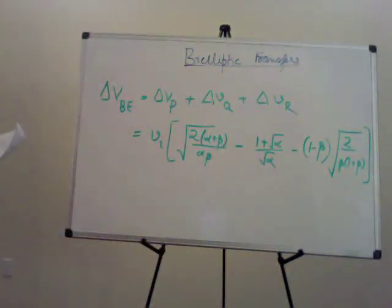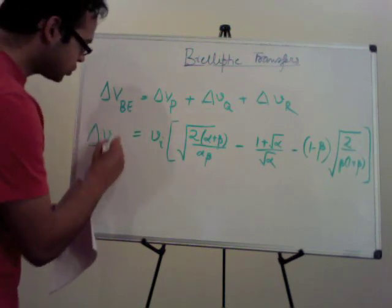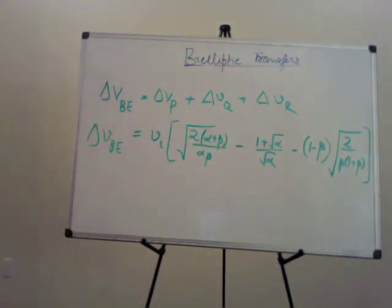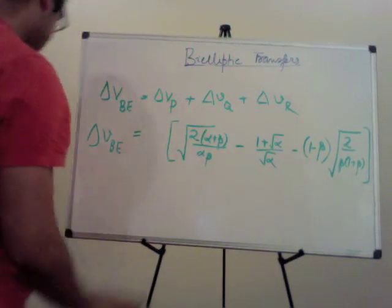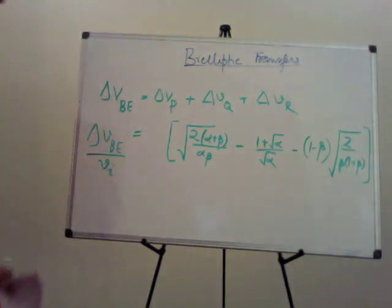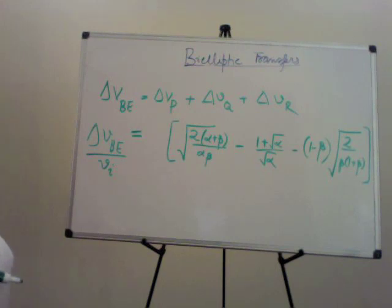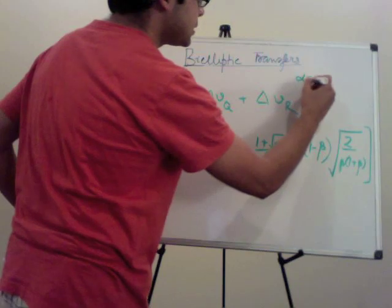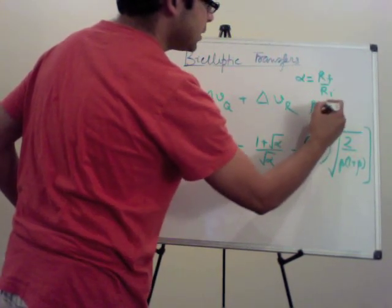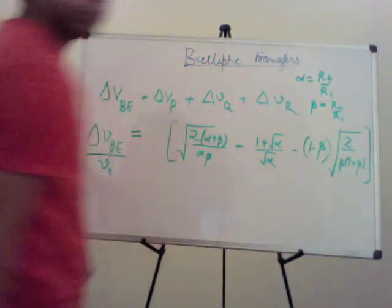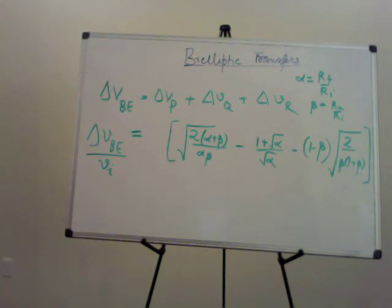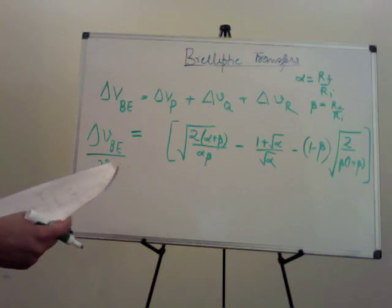The total delta V for the bi-elliptic transfer is commonly expressed as a ratio to the initial velocity, giving a non-dimensional number. This ratio depends on alpha = R_F/R_I and beta = R_A/R_I. Normalizing by the initial velocity removes the effect of the specific initial orbit.